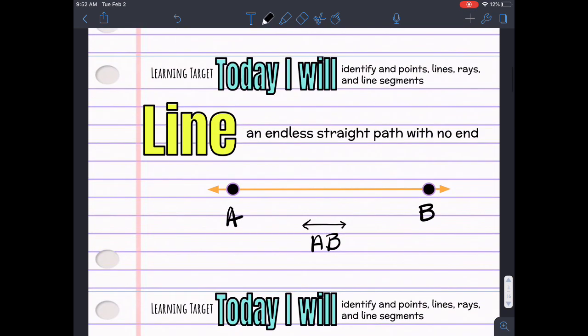And then this is a line with a line segment within it. So, if you look up here at this line, you also have segment AB because you also have this line segment within that line.